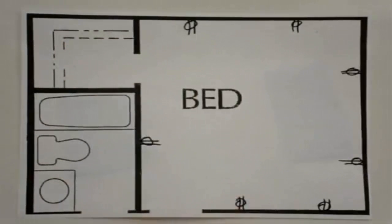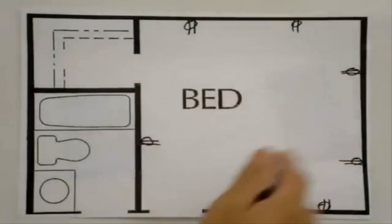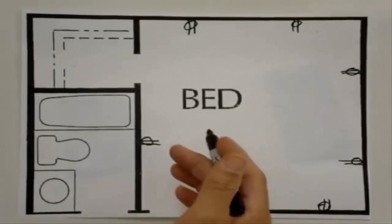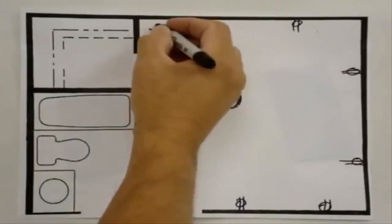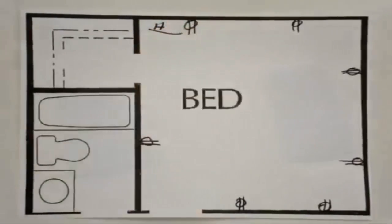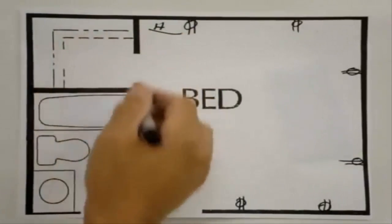Now from here, how do we hook it up to the main box? We're going to pick the closest one to the main box. In this case we'll start with this one here. We'll put an H for a home run. That means from here it is going to the main box.